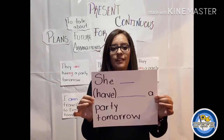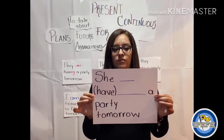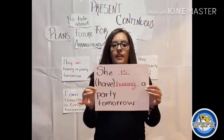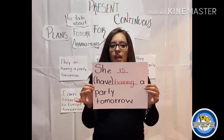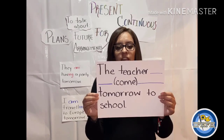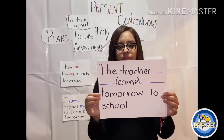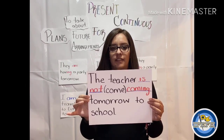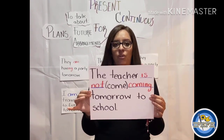Next one. She ___ — the verb is have — ___ a party tomorrow. This is an affirmative sentence. The correct answer is: she is having a party tomorrow. The teacher ___ — the verb is come — ___ tomorrow to school. This is a negative sentence. The correct answer is: the teacher is not coming tomorrow to school.